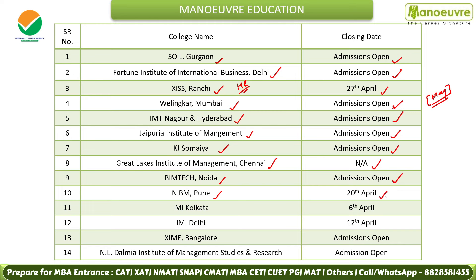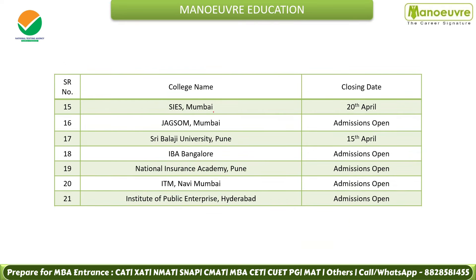NIBM Pune — last date is 20th April, so if you are in the Pune region, target this decent-level college. IMI Kolkata — last date is 6th April. IMI Delhi — last date is 12th April. Both campuses are good. IMI Bangalore — admission open. NL Dalmia Institute of Management and Research — admission open, another good campus in the Mumbai region. Our dedicated podcast has extra insights about this college. SIES in Navi Mumbai — also a good campus; if you are in the Mumbai or Navi Mumbai region, the last date is 20th April.